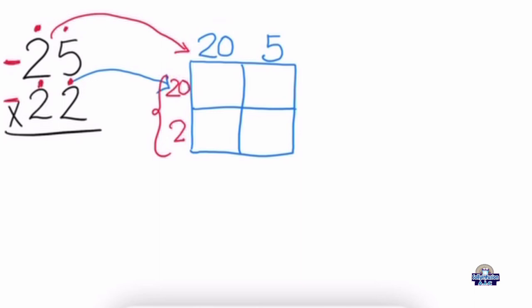Now we have to multiply: 20 by 20, then 5 by 20. Because we have zeros, we put the zeros in place, then 2 times 2 is 4, giving us 400. Then we have a zero here, so we put 0, and 2 times 5 — or 5 times 2 — is 10, giving us 100.